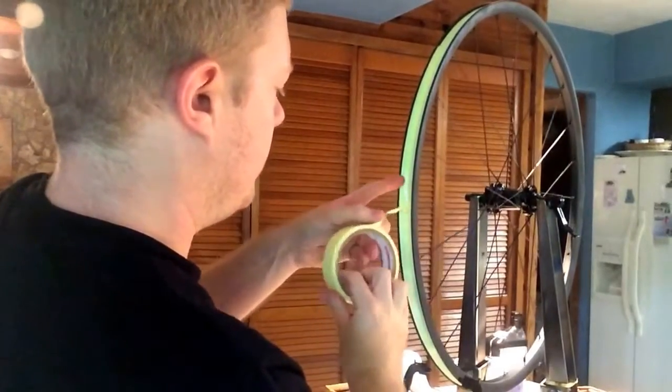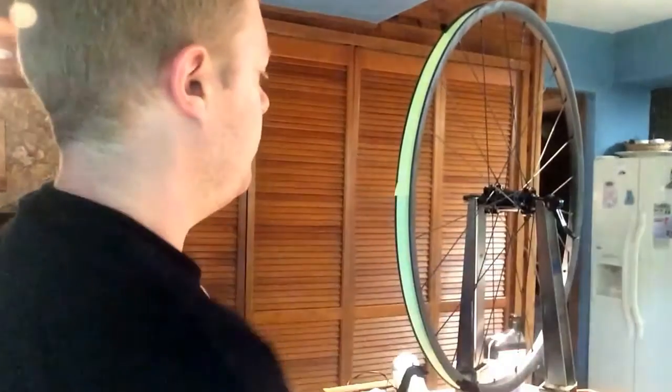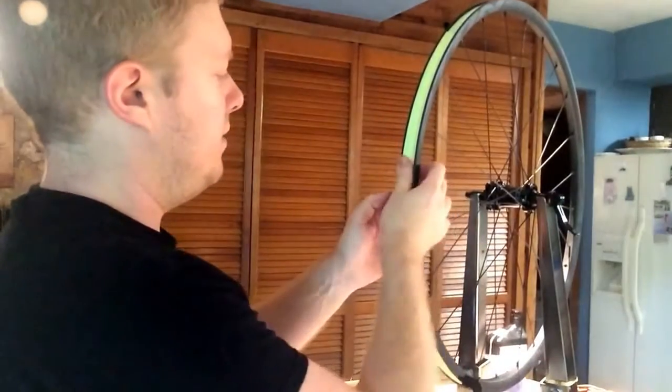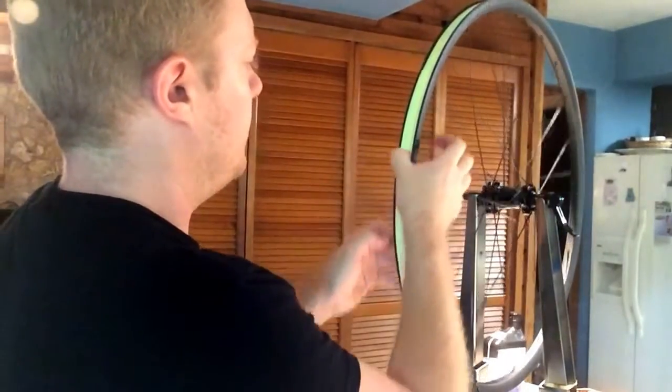I like to just cut where the scissors come in, cut the tape. Make sure it's all in the rim bed very well.